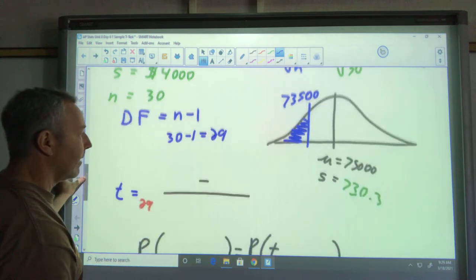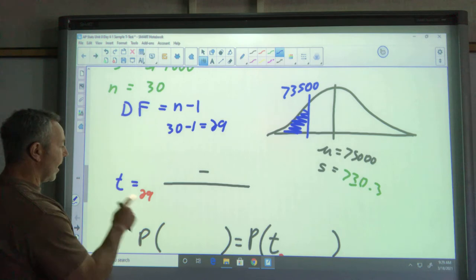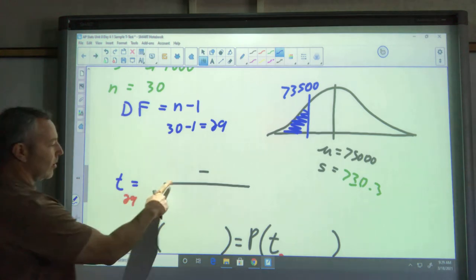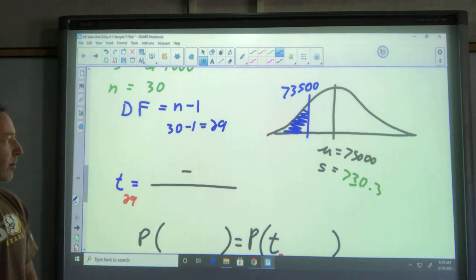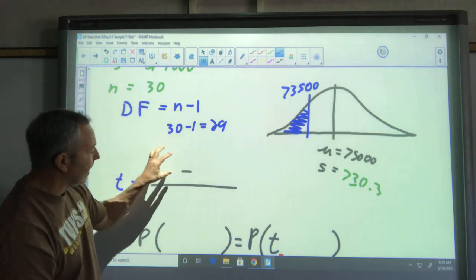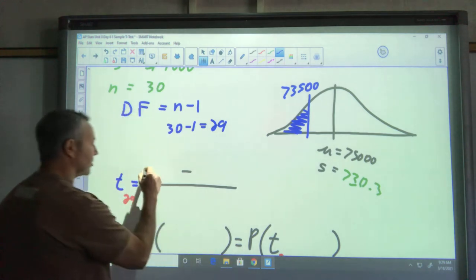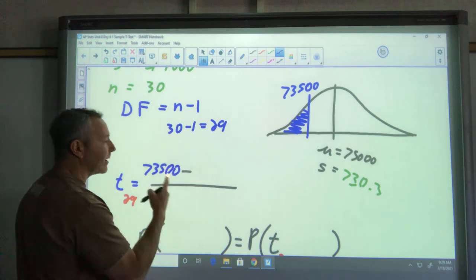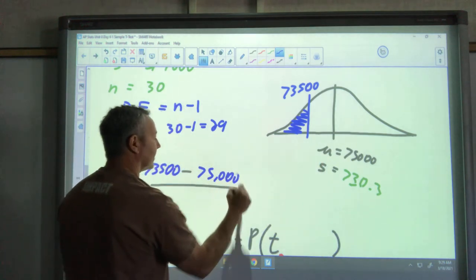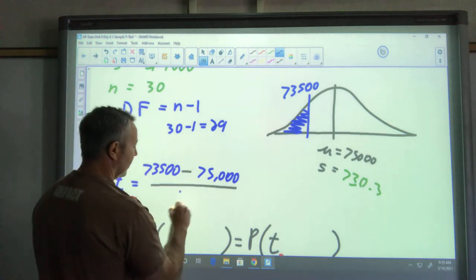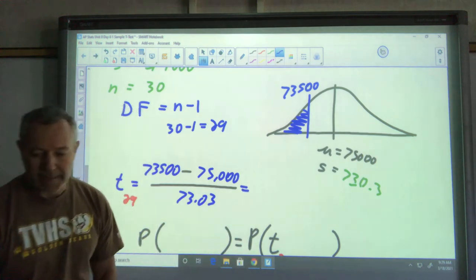That helps me write my problem. I'm going to first calculate my t score. I have t with 29 degrees of freedom. Remember that's different for every problem, which is really cool about the t distribution. This is what I'm asking about in my problem: 73,500 minus what it's supposed to be, 75,000, over the standard deviation of 730.3. I have a t score of negative 2.05.